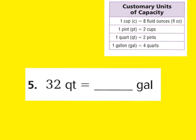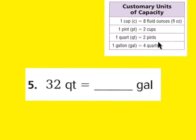Let's skip to question number 5. It says 32 quarts is equal to how many gallons. I'm going from a smaller unit to a larger unit, so I'm going to divide. Looking at the chart, 1 gallon is equal to 4 quarts. So I'll do 32 quarts divided by 4, because 4 quarts are in 1 gallon. 32 divided by 4 is 8, because 8 times 4 is 32. So 8 gallons is the same value as 32 quarts.